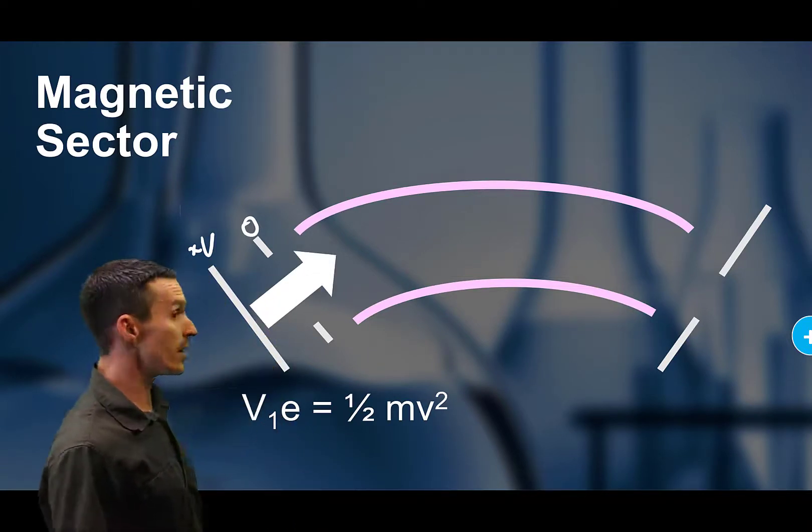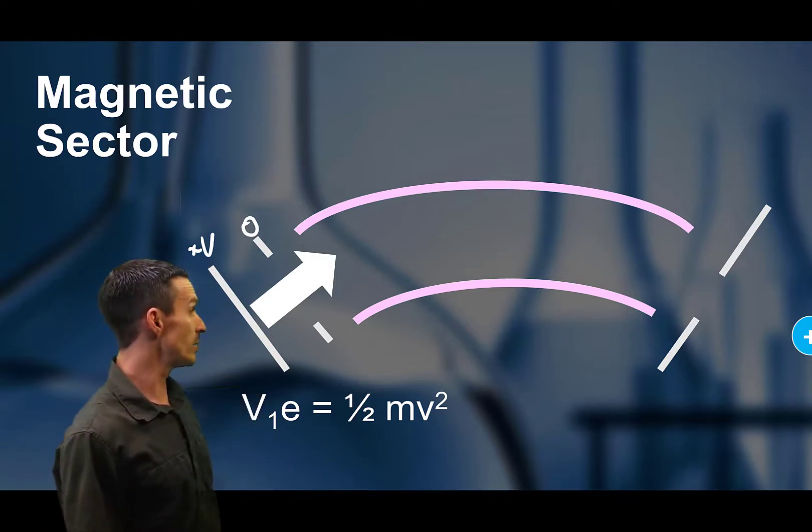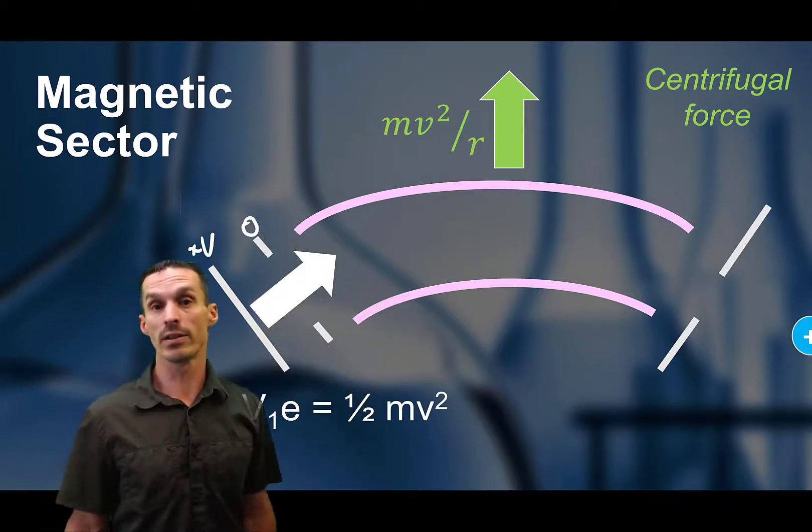Again, that voltage from the ion source applies kinetic energy to our ion, one half mv squared. Now again, the centripetal force is pointing upwards because the ions curving down.